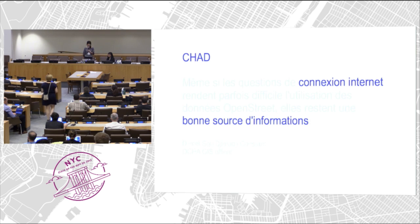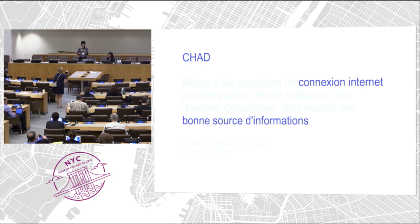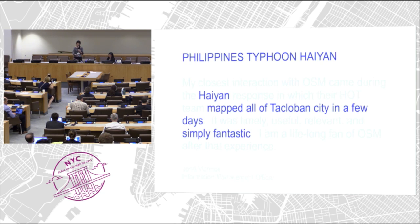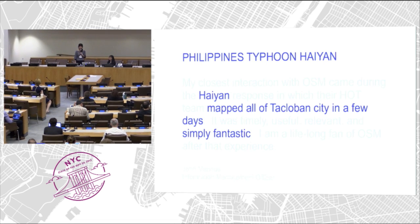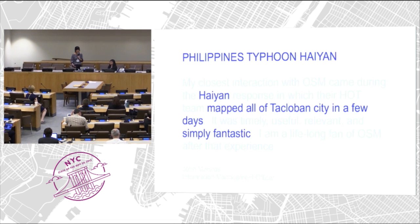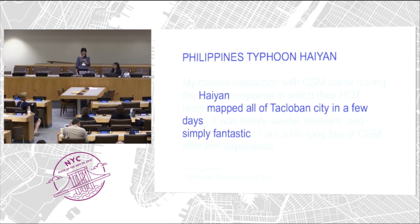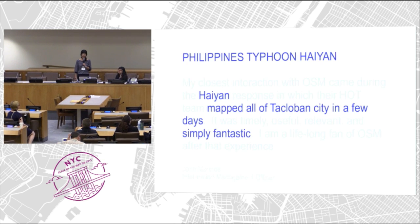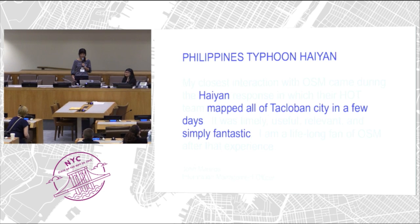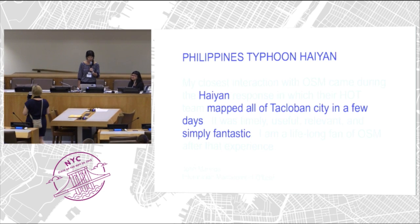This next testimony is in French. A GIS officer based in Chad said that although sometimes due to low connectivity it's difficult to use OpenStreetMap data, it still remains very good information. And John Marinos, based in Thailand, who wanted to work on preparedness for Nepal — he was also deployed during the Philippines Typhoon Haiyan response. He said his closest interaction with OpenStreetMap came during Haiyan, when the HOT team mapped all of Tacloban City in a few days. It was timely, useful, relevant, and simply fantastic. He is a lifelong fan of OpenStreetMap after that experience.